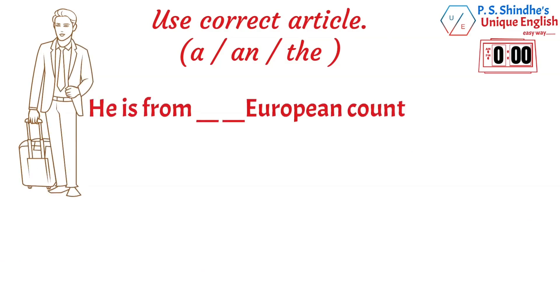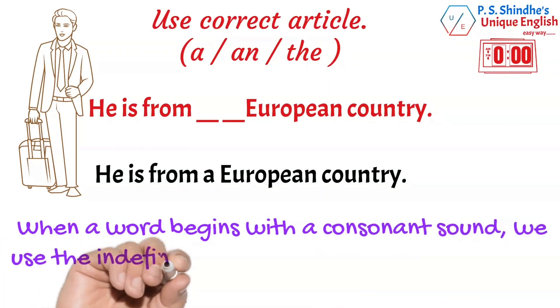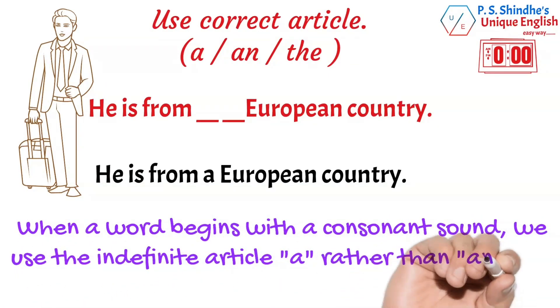He is from blank European country. He is from a European country. The word European begins with a consonant sound, though represented by the letter e. In English, when a word begins with a consonant sound, we use the indefinite article a rather than an.